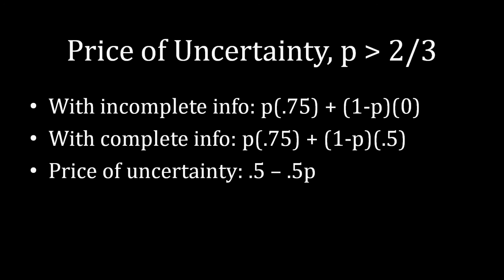We can compare that to the situation with complete information, which is identical to before: Albert is still getting P times 0.75 plus 1-P times 0.5. If you take the complete information line and subtract the incomplete information line, that gives us the third line — which is 0.5 minus 0.5P. Since P is an amount between 0 and 1, this price of uncertainty is always going to be positive. In other words, it's always going to be costly for Albert to not know what's going on.